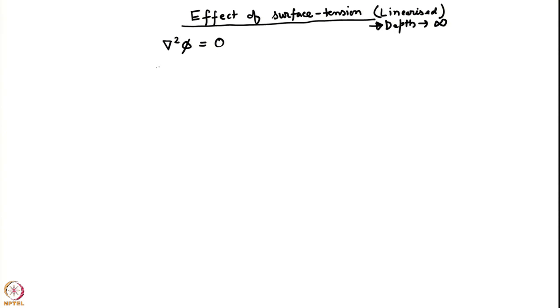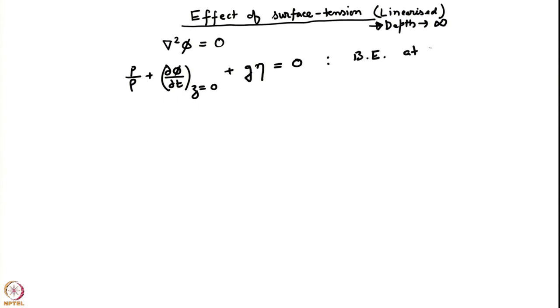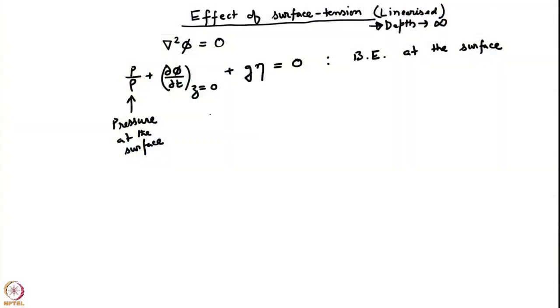Our governing equation remains the Laplace equation. We also have a Bernoulli equation which determines pressure — here I am writing the linearized Bernoulli equation obtained at order epsilon. This is the Bernoulli equation at the free surface. Until now we assumed the pressure at the surface to be zero because we ignored the gaseous medium above. However, because of surface tension there is going to be a jump in pressure. We will calculate an expression for this pressure jump — it is just a modification of one boundary condition — and once we account for it, the rest of the analysis remains nearly the same.